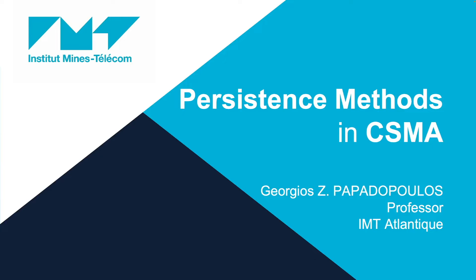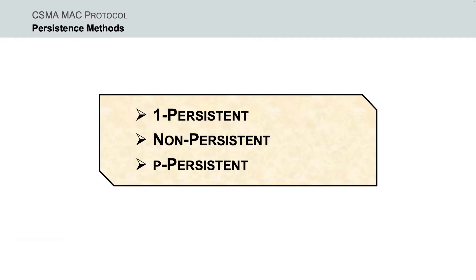Hello folks, I am Gheorgios Papadopoulos and welcome to this video on persistent methods in CSMA MAC protocol. In the following, we are going to talk about what should a node do if the shared transmission medium is busy or idle. To answer this question, three methods have been defined: the one-persistent, the non-persistent, and the P-persistent method.